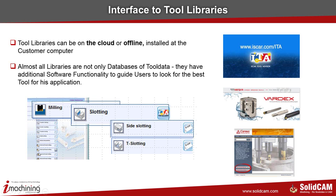In this example you see the UI from the ISCAR Tool Advisor where you define your application. You say this is milling, then the next step is slotting, then side slotting or T-slotting — and so you narrow down the number of offered tools to find the best one.